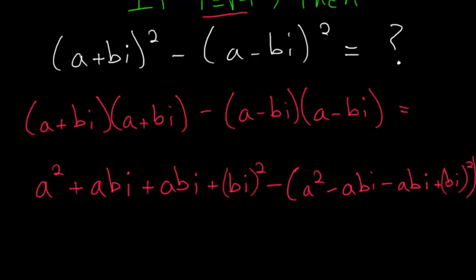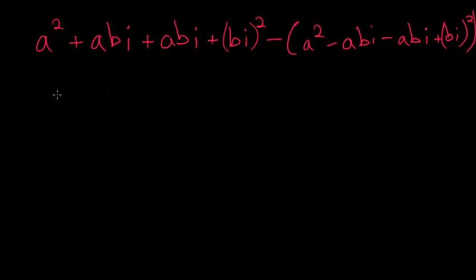Now we just have to simplify this a little further. So I'll write a squared, and then these are the same thing. So we have 2abi, and then plus bi squared, so we'll have b squared times i squared.